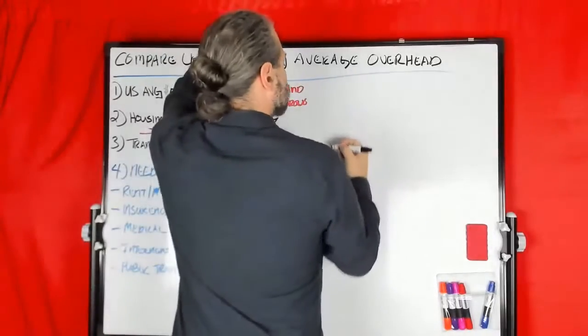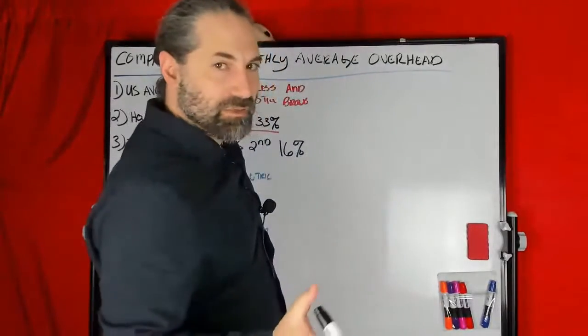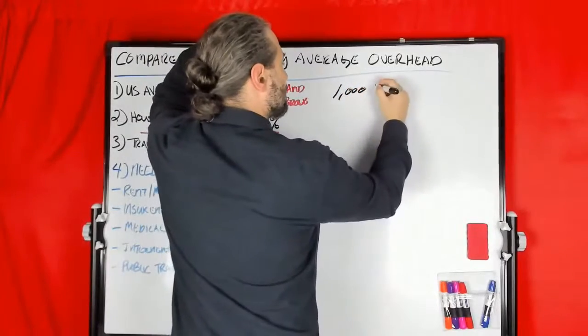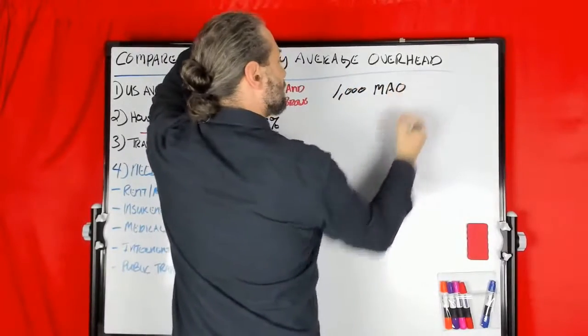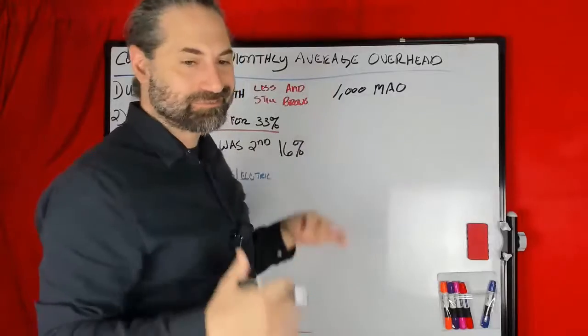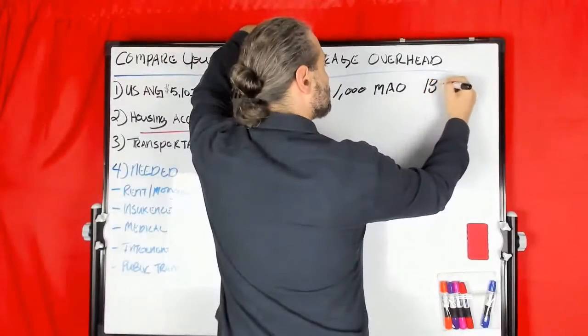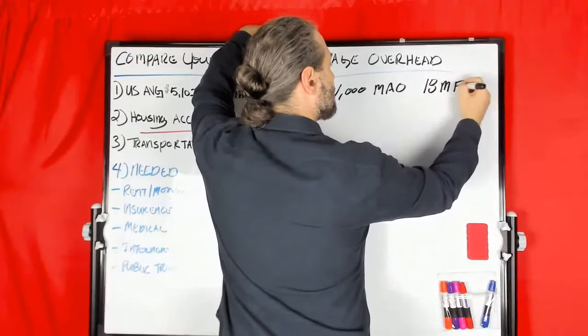Let's say, I'm going to use really easy numbers. Let's say $1,000 is your monthly average overhead. Monthly average overhead. I know it's not. You know it's not. This is just, okay? I need 18 months for my foundation account.